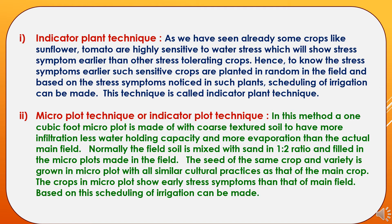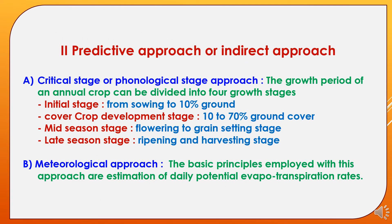The second technique is the micro-plot or indicator plot technique. A one-cubic-foot micro-plot is made with coarse-texture soil — field soil mixed with sand in a 1:2 ratio — to have more infiltration, less water-holding capacity, and more evaporation than the main field. The same crop and variety is grown in the micro-plot with all similar cultural practices as the main crop. The crop in the micro-plot shows earlier stress symptoms than the main field, and based on this, scheduling of irrigation can be made.